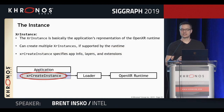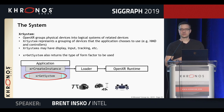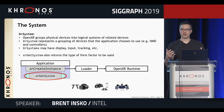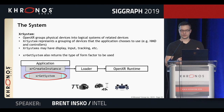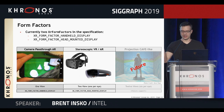The instance in OpenXR is the application's representation of the underlying runtime — this is how the application talks to the runtime. You can create multiple instances if supported by the runtime, and the instance specifies the app information, layers, and extensions. The system is a group of physical devices grouped into a logical setup — think of a headset and a pair of controllers, or headset, controllers, and other trackers. It could have display, input, and tracking. Right now we have just two form factors: handheld displays for camera pass-through AR, and head-mounted stereoscopic displays.